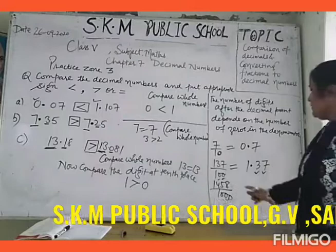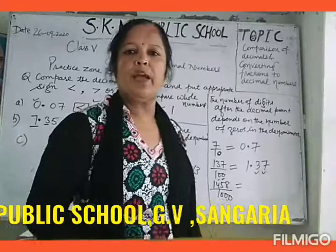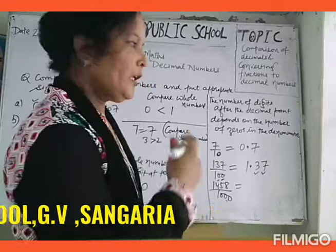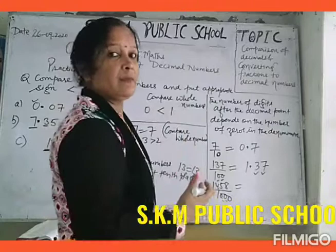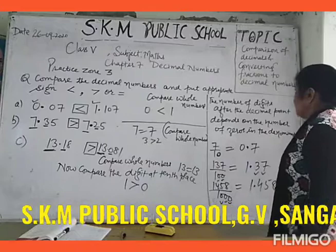Then 1458 divided by 1000: how many zeros are there? There are three zeros. In the denominator there are four digits. How many digits will be shifted after the decimal? Three, because there are three zeros in the denominator. It will become 1.458.